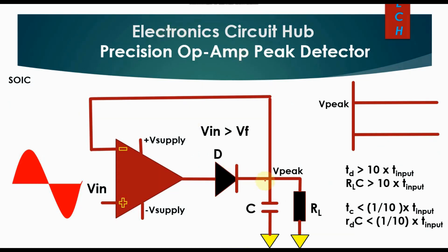Since the output of this operational amplifier is connected with a finite load which is a varying load, this capacitor will discharge through that path and the discharging time constant will be RL times C. In any case, the discharging time constant of this capacitor should be greater than 10 times the time constant of your input signal — that means RLC should be greater than 10T. Also, the charging time RDC should be less than one tenth of the time constant of the input signal.